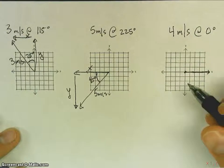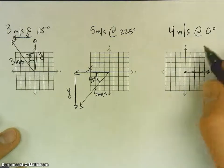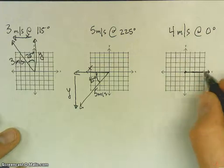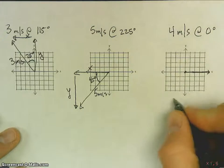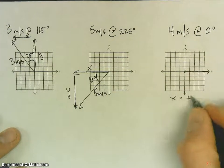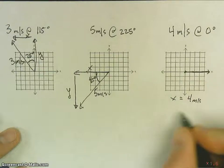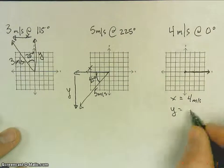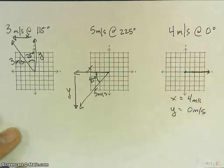My last one, I get it easy, this one has no angle, it's all on the x axis. So, I can actually go ahead and say x, in this case, is equal to 4 meters per second. Y, it's not moving in the y, 0 meters per second.